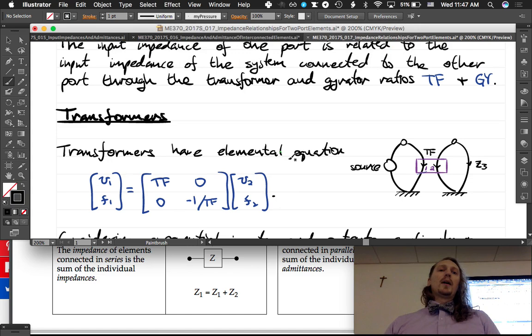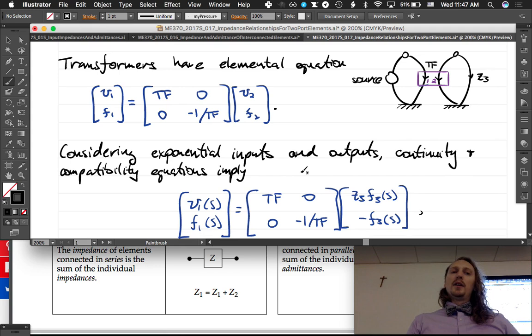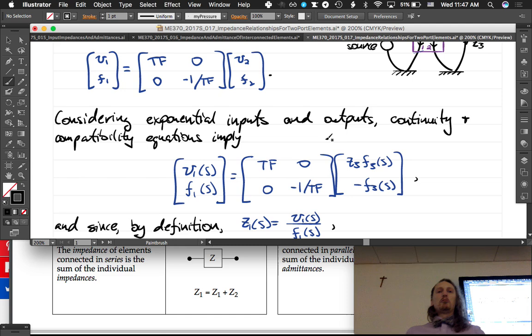So that's the elemental equation we defined before for a two-port element, right? Now consider exponential inputs and outputs. The continuity and compatibility equations imply the following. I'm telling you it's really not that hard to derive this, but I'm giving a little bit of a shortcut to say that v1 is related to z3 times f3, and f1 is related to negative f3 in this way.